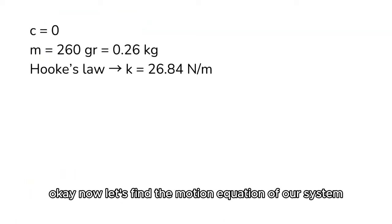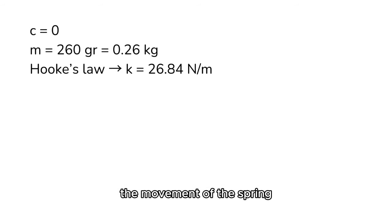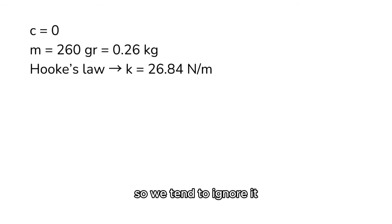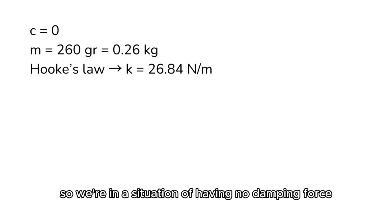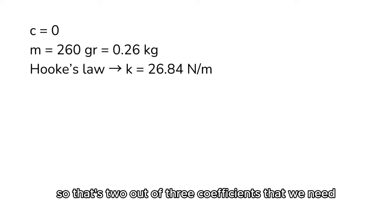Okay, now let's find the motion equation of our system. In our system, there is actually air friction that affects the movement of the spring, but this air friction is generally pretty small though, so we tend to ignore it. So we're in a situation of having no damping force, and our coefficient c is zero. And then the mass is 260 grams, that is 0.26 kilograms. Alright, so that's 2 out of 3 coefficients that we need.